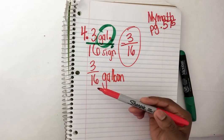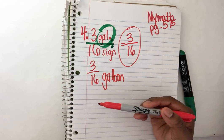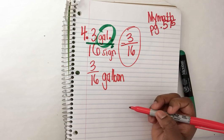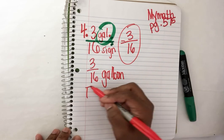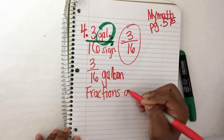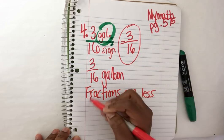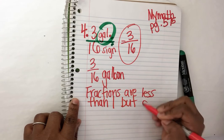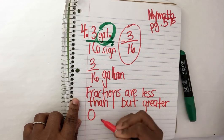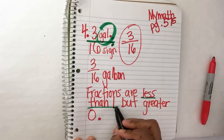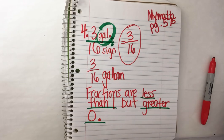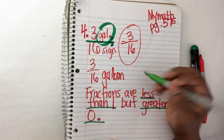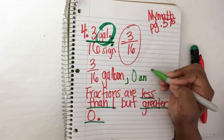Then the last sentence says between what two whole numbers does the answer lie? I know that fractions are less than one but greater than zero. I'll say that again and I'll write it down so you can take this note. Most fractions are less than one but greater than zero. So we can answer that question between what two numbers does our answer lie? So our answer three sixteenths gallon lies between zero and one.